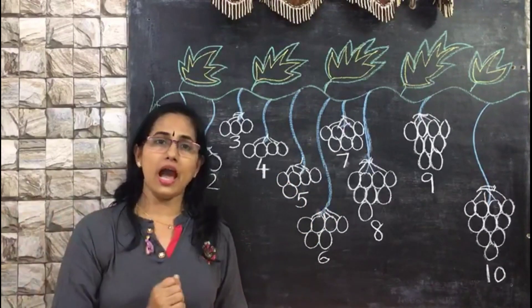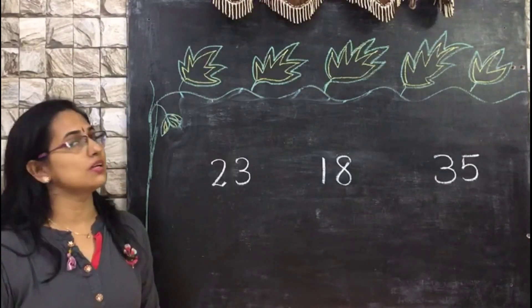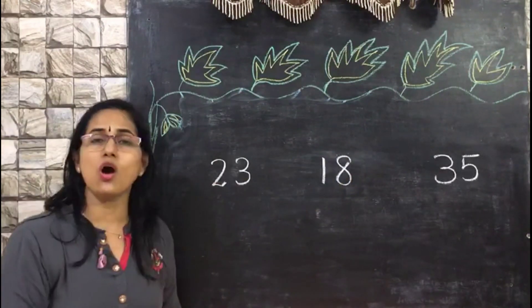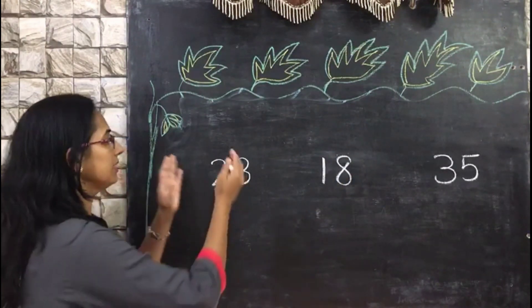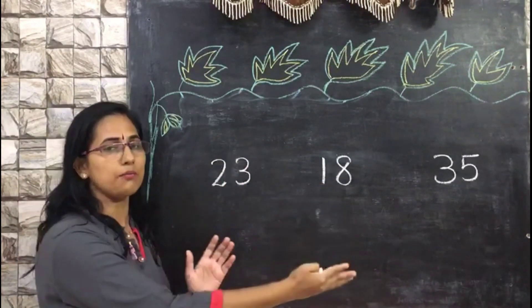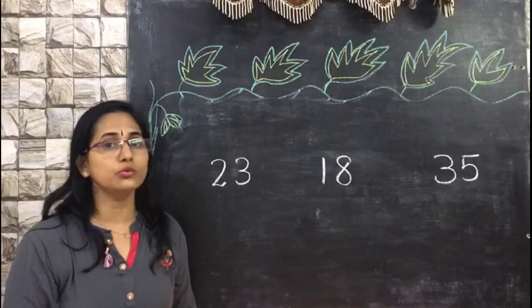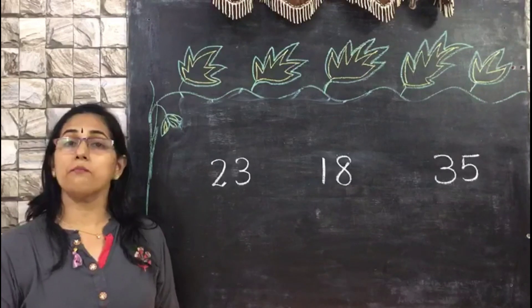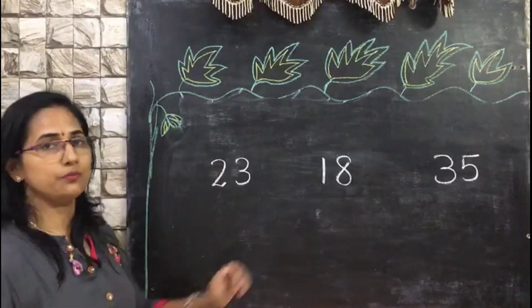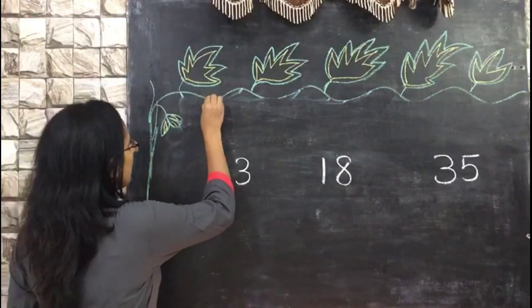Now the real challenge comes when we introduce two-digit numbers, as well as when using only numbers. When you ask your child to compare numbers and find which is the smallest and which is the biggest, they may find some difficulty. Here I'm going to use the same bunch-of-grapes method. The numbers we'll work with are 23, 18, and 35.